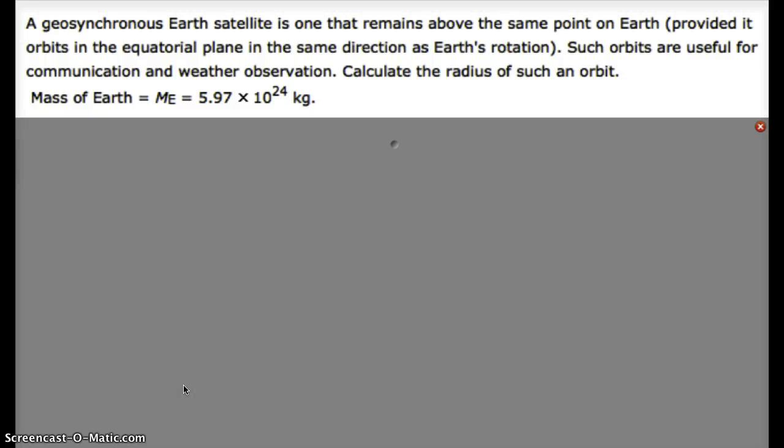Hi everyone, this is a problem about an interesting satellite called a geosynchronous satellite. That's a satellite that's placed in orbit above the equator so that it stays in one position above the Earth's surface, even though it's orbiting about the Earth's center of mass.